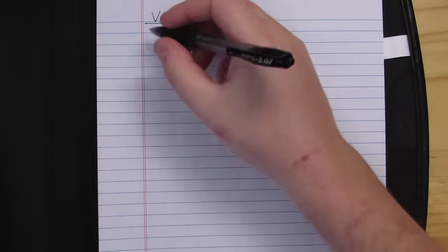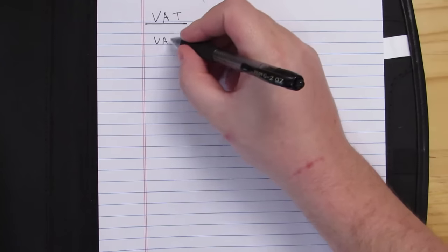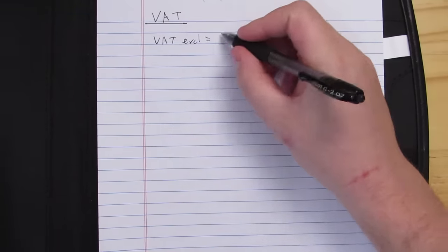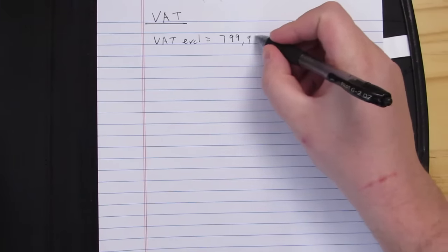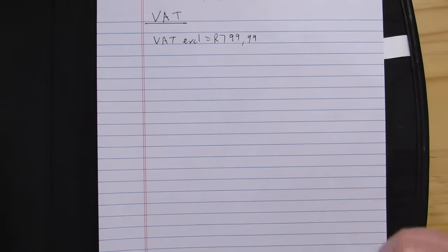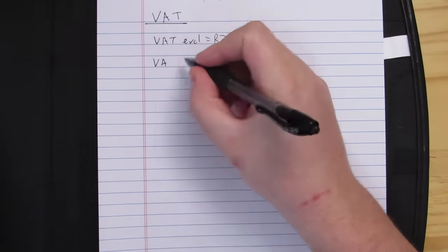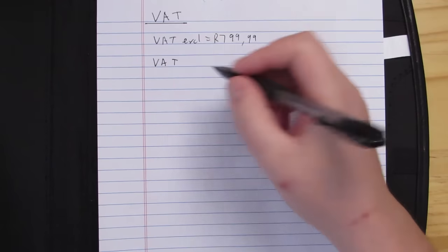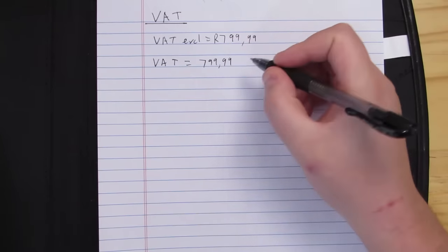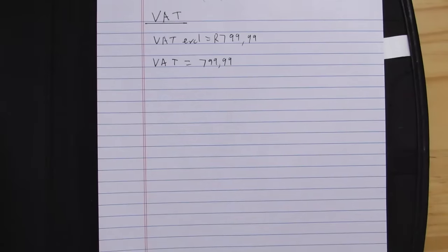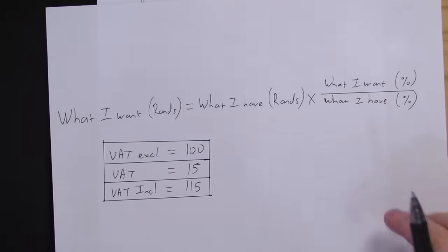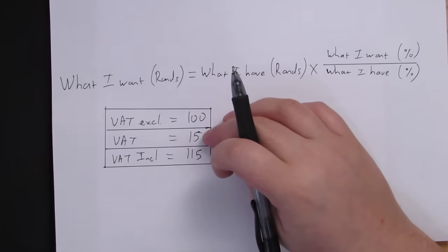Let's take a look at an example. Say we have been given the VAT exclusive price of 799.99. I want to work out two things. First, I want to work out what the VAT is. I've been given the VAT exclusive amount of 799.99, and what I want is the VAT amount, so I want my 15.